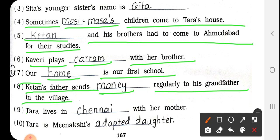Number 9: Tara lives in Dash with her mother. तो Tara अपनी मम्मा के साथ कहाँ पर रहती है? So answer is Chennai — C-H-E-N-N-A-I — Chennai.